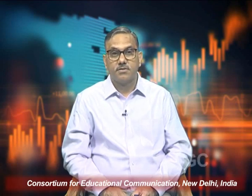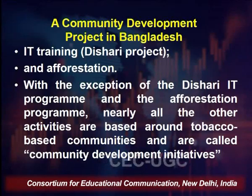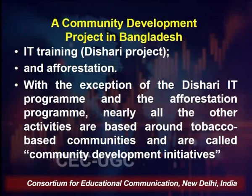These four areas are regarded as key result areas — KRAs — where companies are supposed to contribute towards society. What they call CSI, Corporate Social Investment, means the company is investing in these social issues, ranging from environment, education, health and hygiene, to social economy. They link this into 3 main projects: community development of tobacco farmers, IT training through a project called the Dishari project, and afforestation — working towards greening the environment through plantation.